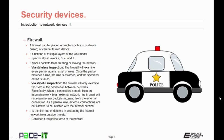A firewall can be placed on routers or hosts — it can be software-based or its own device. A firewall functions at multiple layers of the OSI model, specifically at Layers 2, 3, 4, and 7. A firewall can block packets from entering or leaving the network through one of two methods. It can do stateless inspection, in which the firewall examines every packet against a set of rules — once the packet matches a rule, the rule is enforced and the specified action is taken.